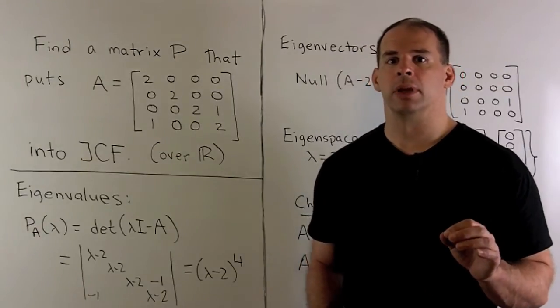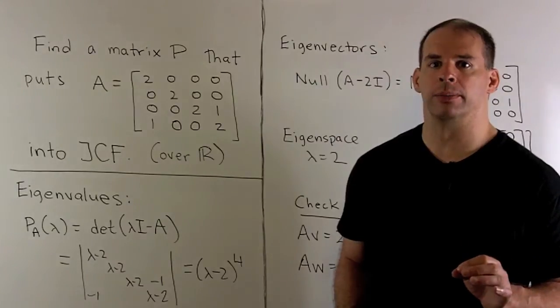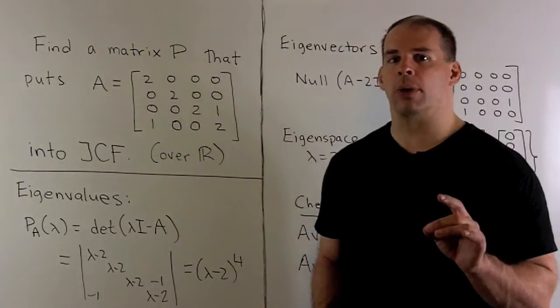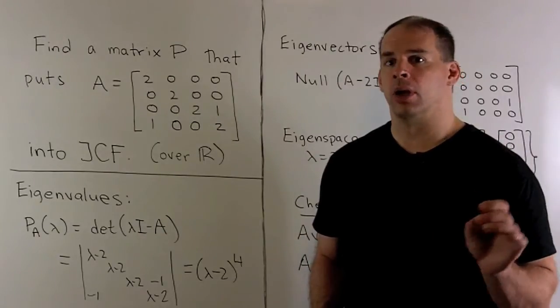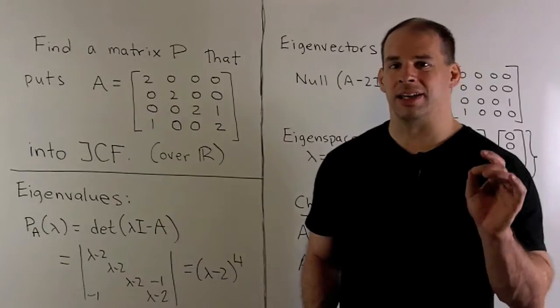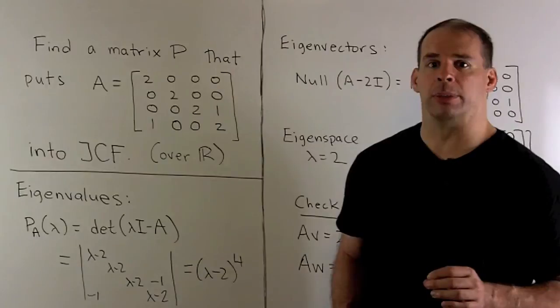In our previous problem, we found a Jordan canonical form with two Jordan blocks of size 2. Here, we're going to have a Jordan form with two blocks, one of size 3, one of size 1. The key difference here is we're going to focus on finding a generator for the 3x3 block.